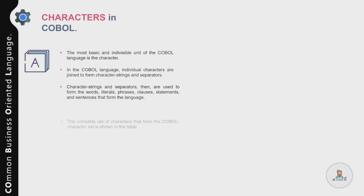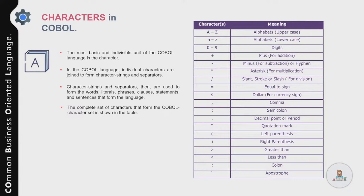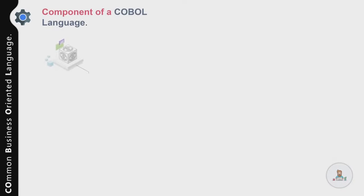The basic characters used in formatting character strings and separators in the source code include A to Z as alphabets in both uppercase and lowercase, digits from 0 to 9, and operators such as plus sign, minus sign, asterisk, forward slash, equal sign, currency symbol, and other special symbols that can be used for strings or separators in your COBOL program.